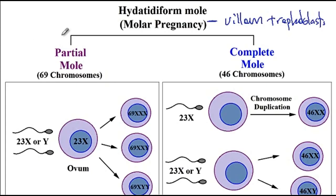Depending on the type of fertilization that is going on, there could be a partial mole where there are 69 chromosomes, or there could be a complete mole where there would be 46 chromosomes. Next, let's discuss the difference between the partial mole and the complete mole.